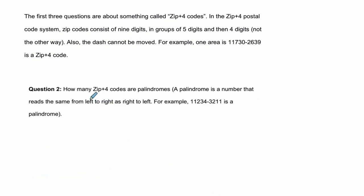Now, in the second problem here, it says how many zip plus four codes are palindromes? And a palindrome is a number that reads the same from left to right as right to left. So here's one example. I'll just write it out. It'll help me think of the problem. One, one, two, three, four. Okay, so you can see it goes one, one, two, three. Four is in the middle.